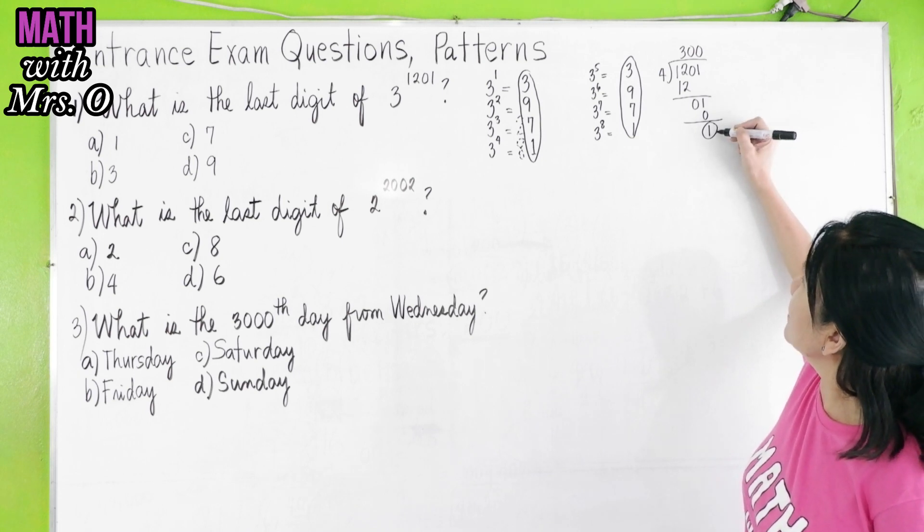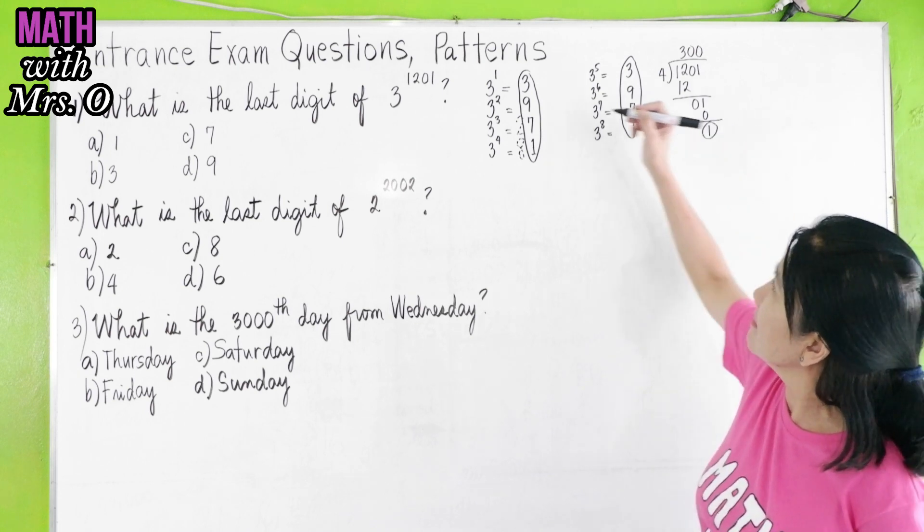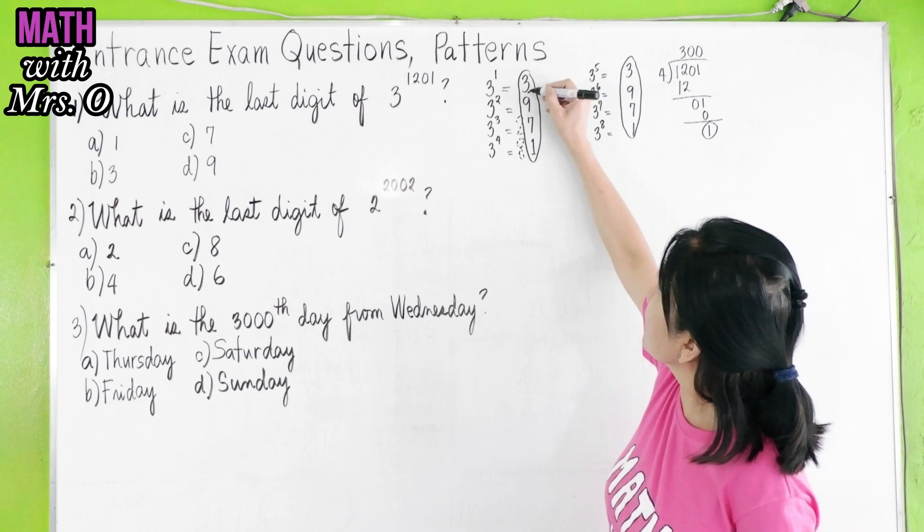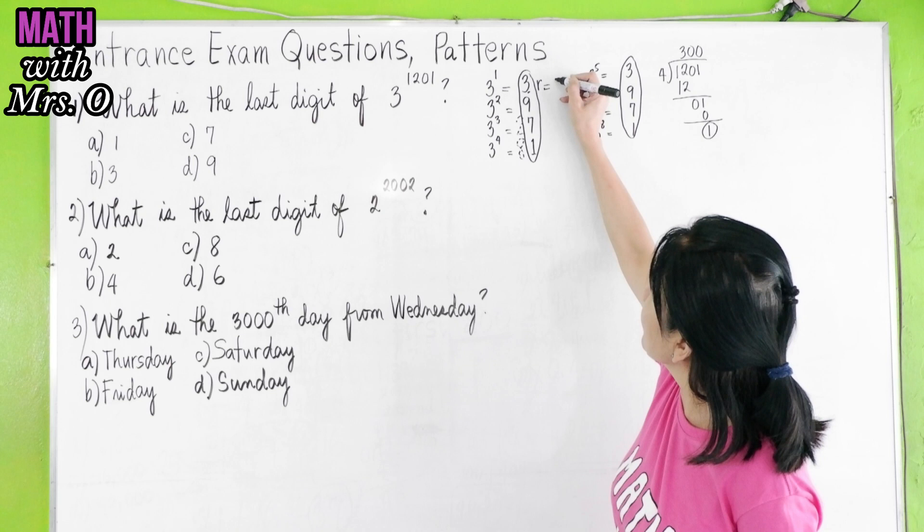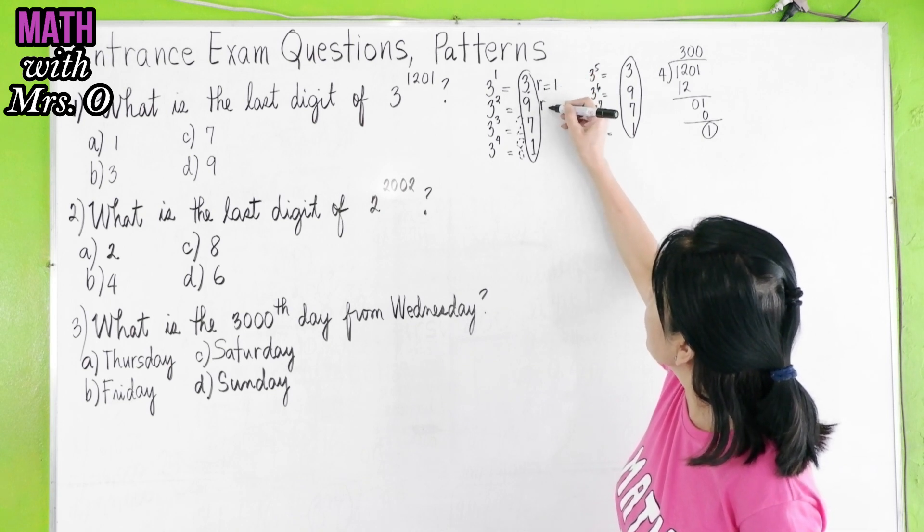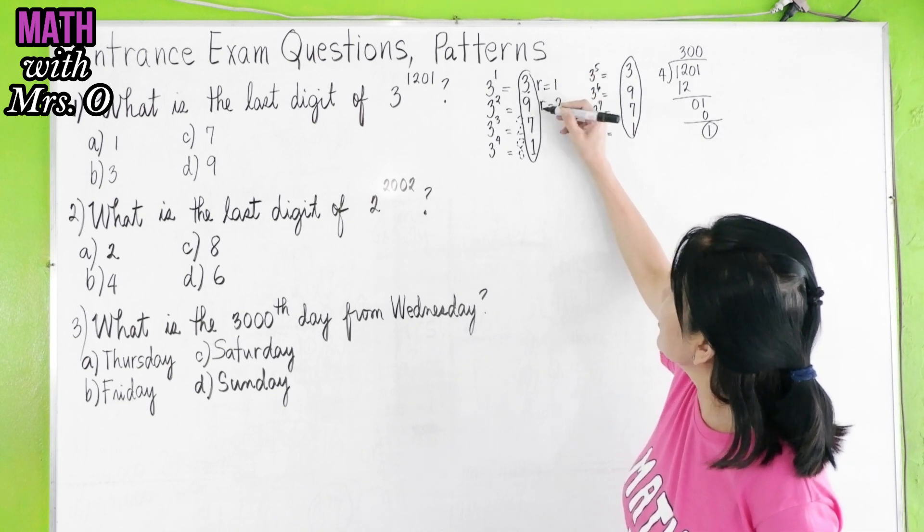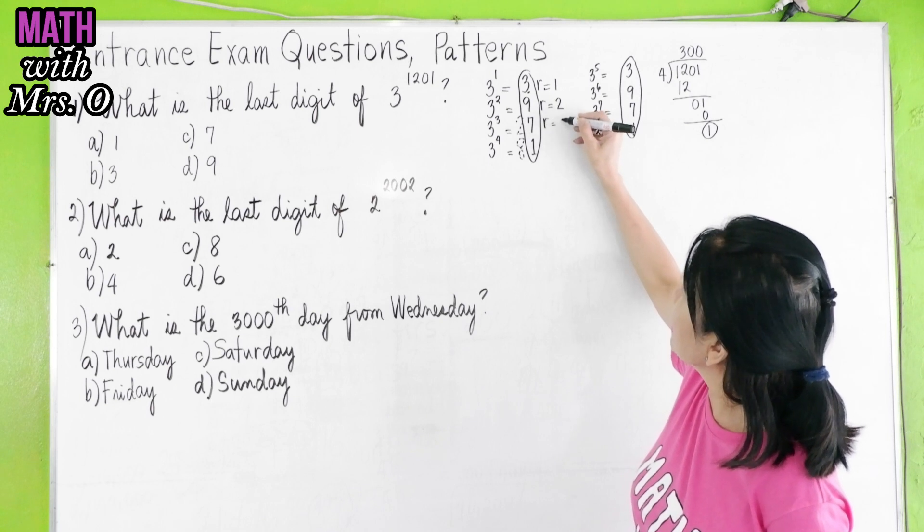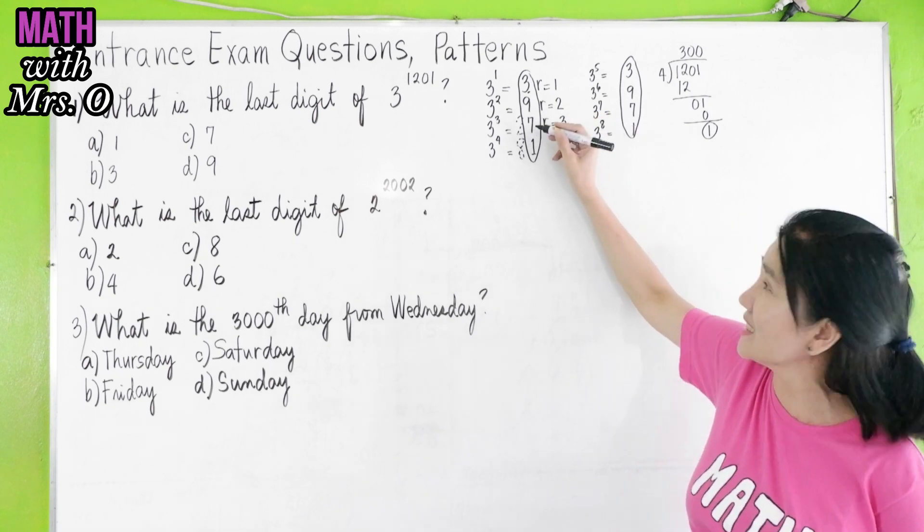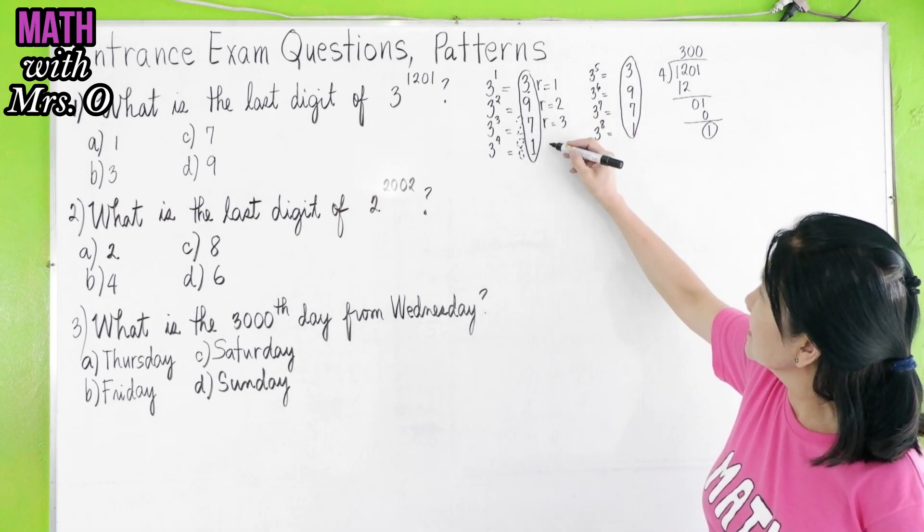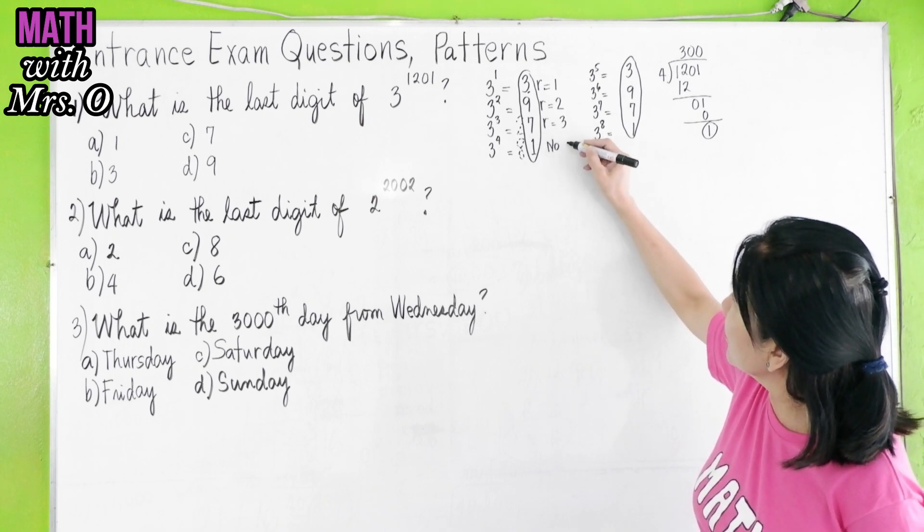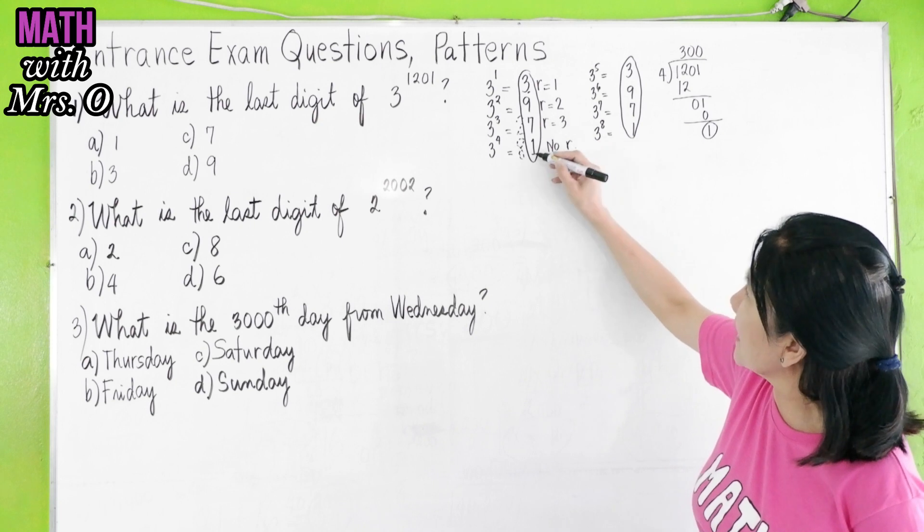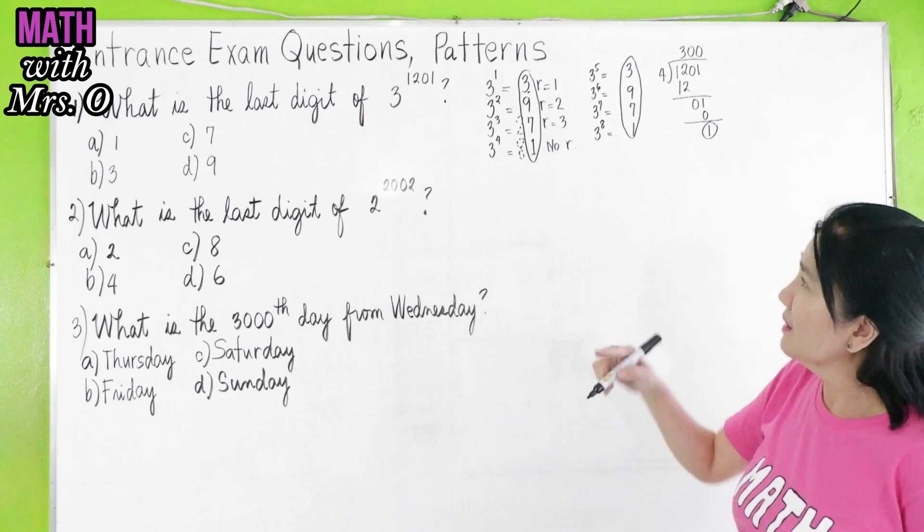If the remainder is 1, that would mean that the last digit is 3. This gives you a remainder equal to 1. If the remainder is 2, your last digit is 9. If the remainder is 3, your last digit is 7. If there's no remainder, then your last digit is 1.